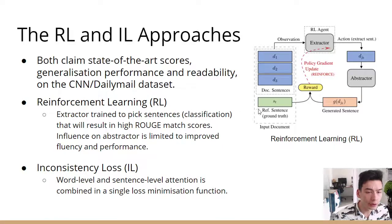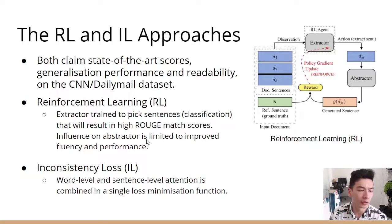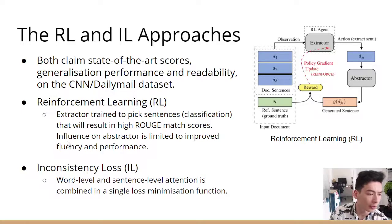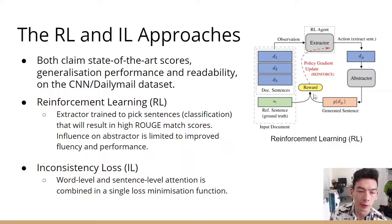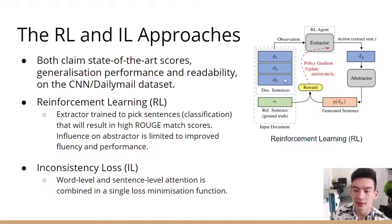The reinforcement learning approach, which is shown in a diagram here, essentially trains the extractor to pick sentences — a classification task — that will result in high Rouge match scores. They separate the abstractor and the extractor quite significantly, so the influence on the abstractor is limited, and they say this improves the fluency and performance of the model. You train the extractor first on picking the best sentences, and then using that, you train the abstractor on a sentence-to-sentence training regime.